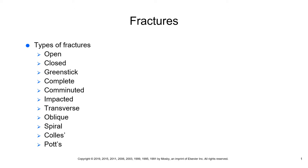A greenstick fracture is more common in children because their bones are more flexible and softer. The fracture line extends only partially through the bone. Make sure you refer to the pictures in your book for greenstick fractures. A complete fracture, on the other hand, extends completely through the bone, and the periosteum is interrupted on both sides.